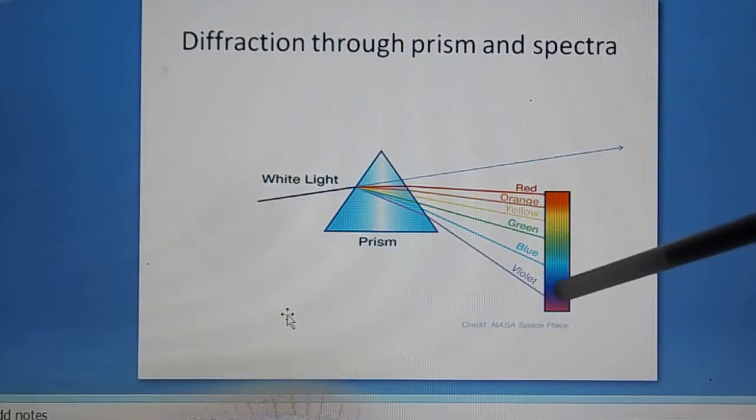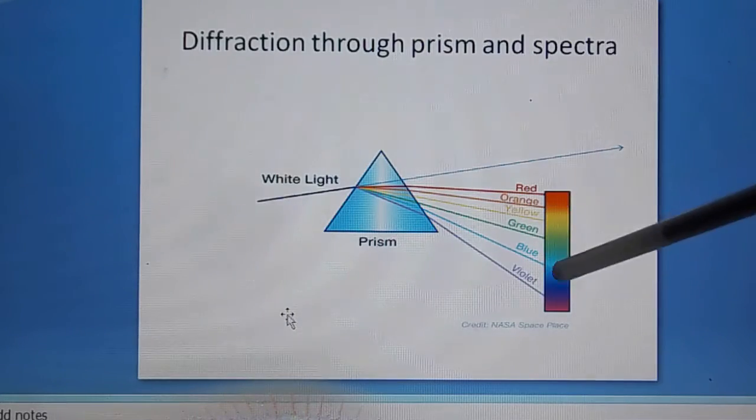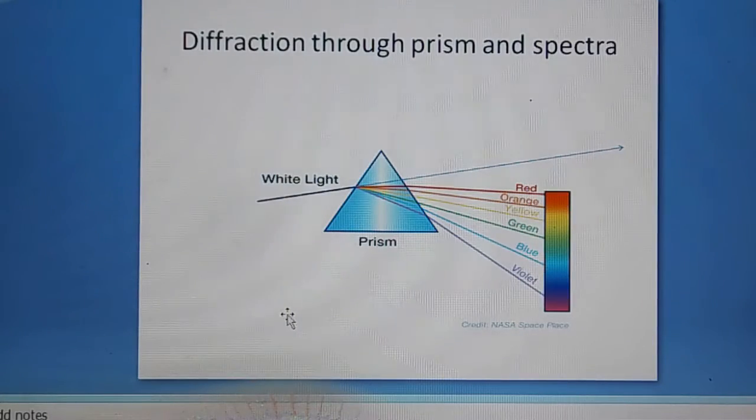You can see violet, indigo, blue, green, yellow, orange, and red in this way. These are two diffraction cases.